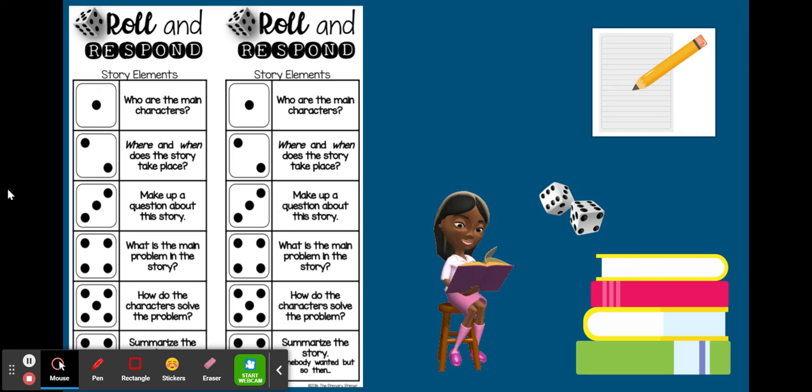Paso uno, lea un libro. Paso dos, tira el dado una vez. Paso tres, responda la pregunta que va con el número de su dado.